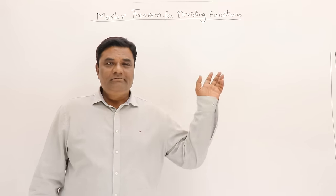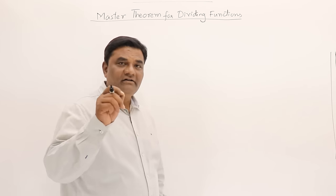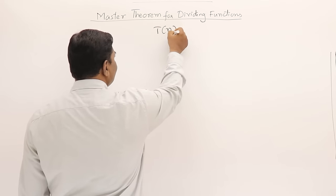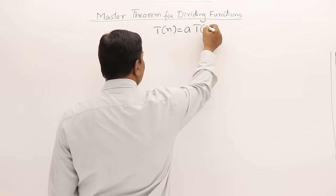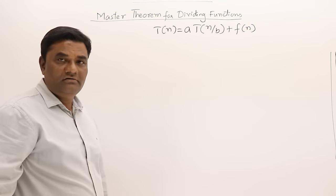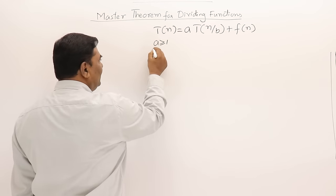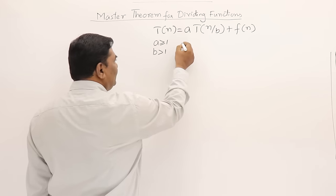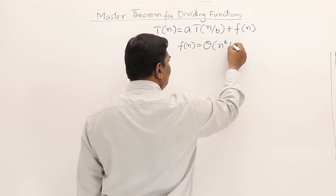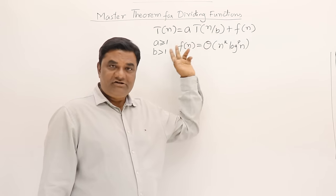Let us look at Master's Theorem for dividing functions. The general form of the recurrence relation is T(n) = aT(n/b) + f(n). We assume that a is greater than or equal to 1, b is greater than 1, and f(n) is of the form Theta(n^k * log^p(n)).